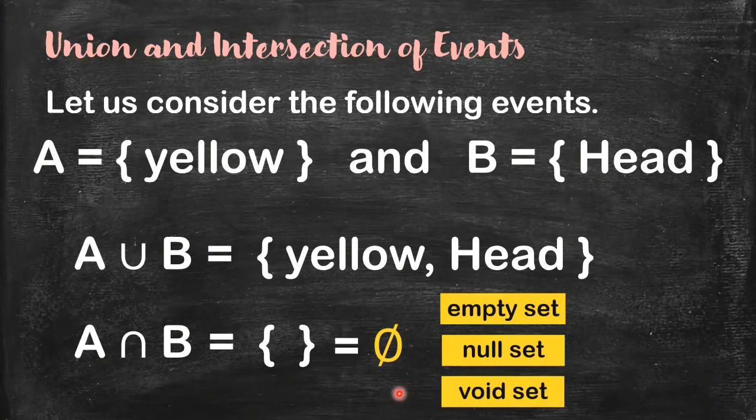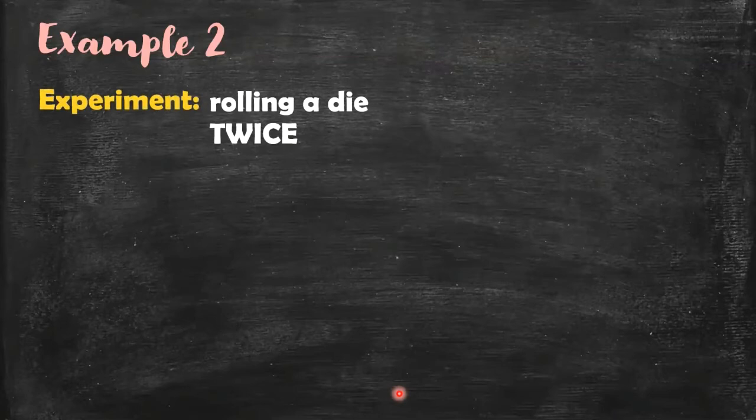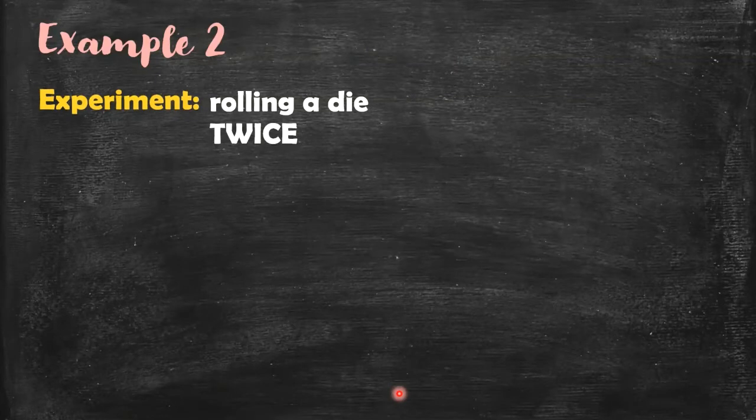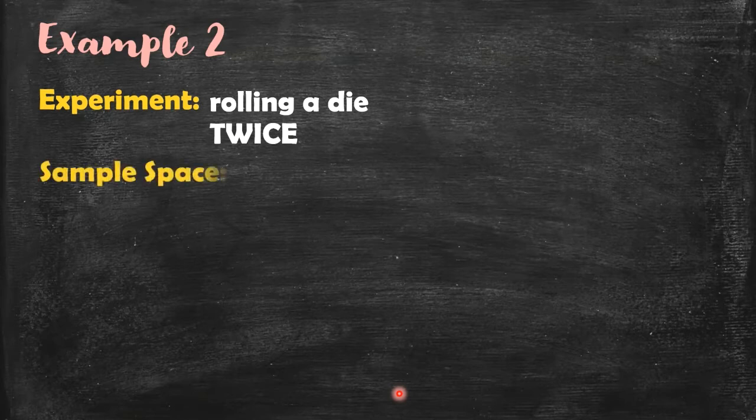So let's have another example. Let's consider this experiment: rolling a die twice. So we roll it two times.